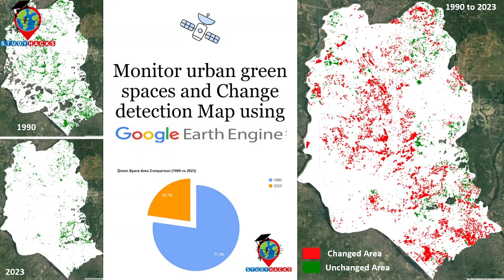Hello everyone, welcome to the Study Hacks Institute of GIS and Remote Sensing. Today I will cover an important topic — how we can easily monitor urban green space and create a change detection map using Google Earth Engine. I will explore all of those things one by one.